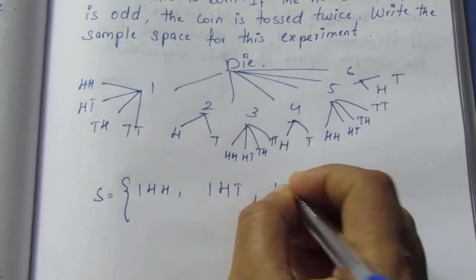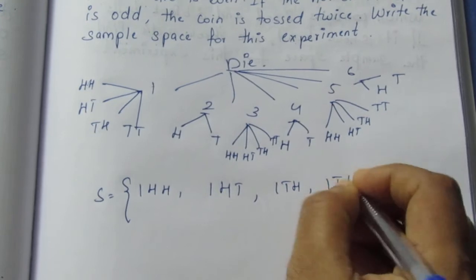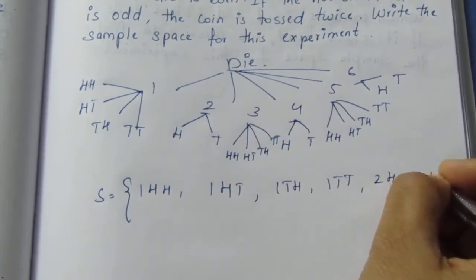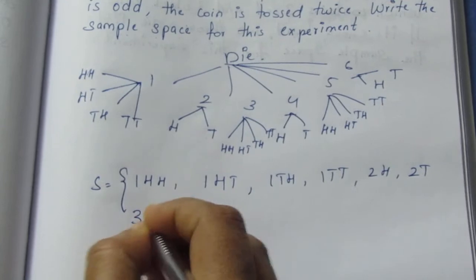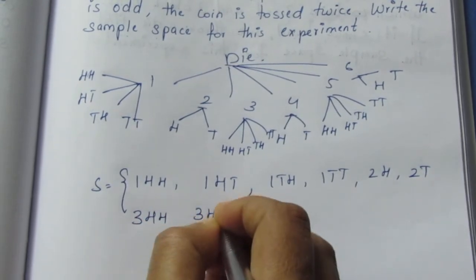This is the sample space: 1TH, 1TT, 2H, 2T, 3HH, 3HT.